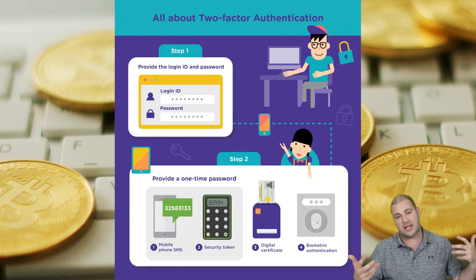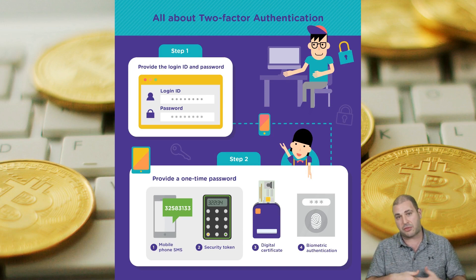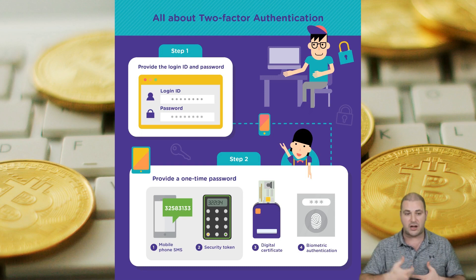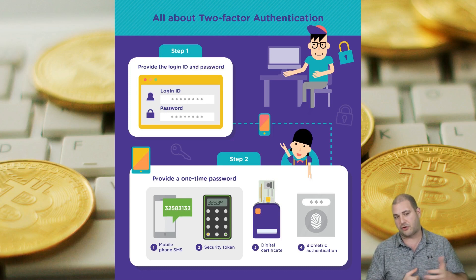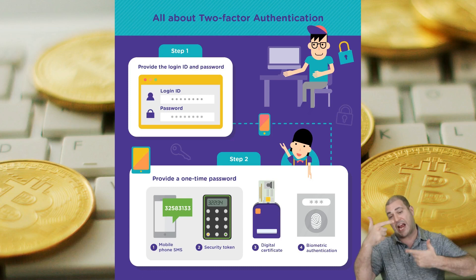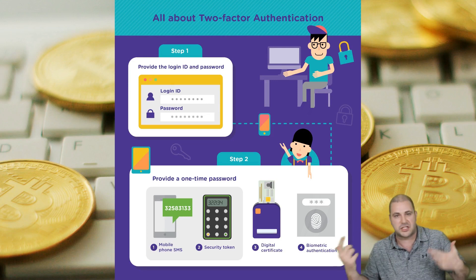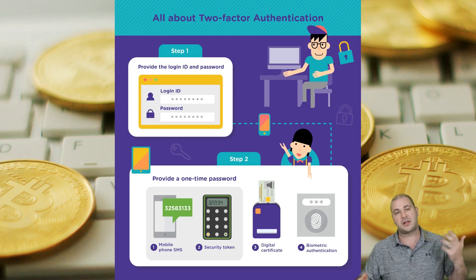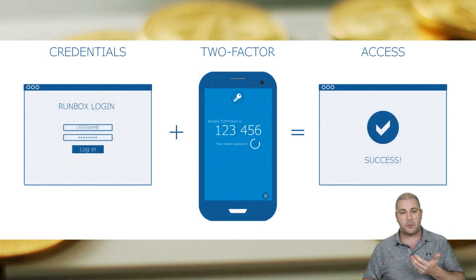How it works is you put in your normal password and then it asks for a second authentication — through your phone. It could be a digital certificate, a fingerprint scan, or a biometric face scan, but generally 99% of them now use SMS or a Google Authenticator security token which changes every 30 seconds, making it really hard to hack.